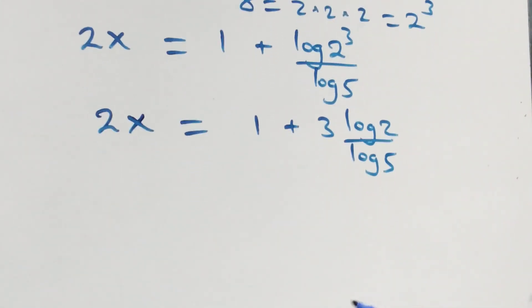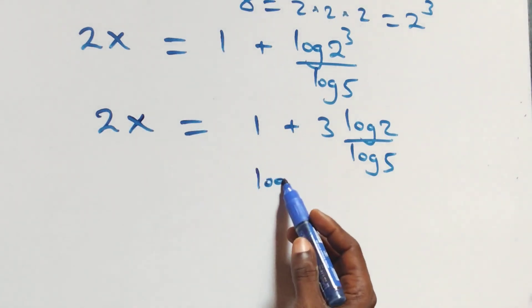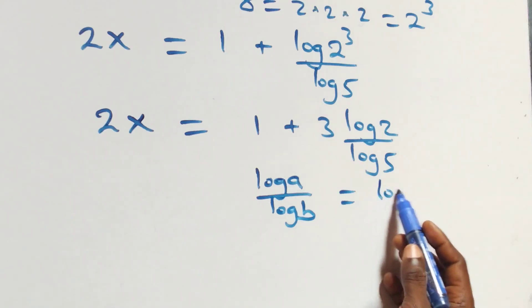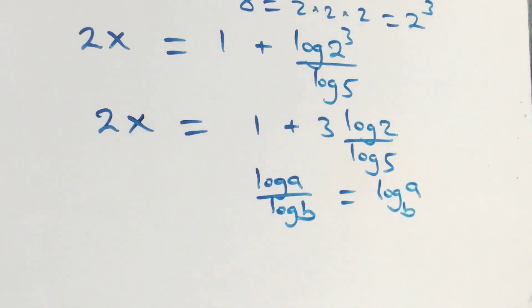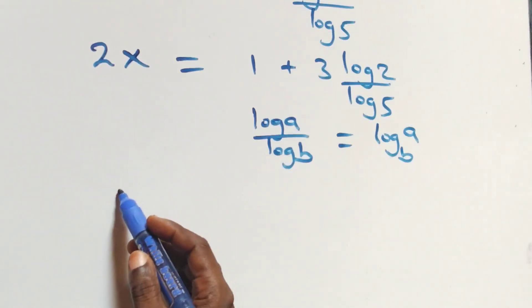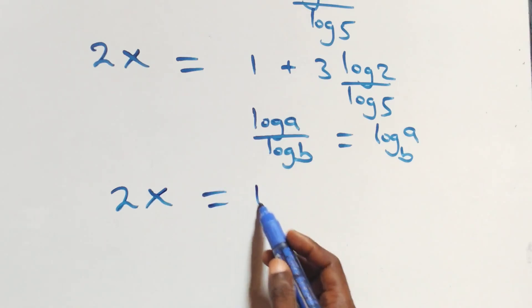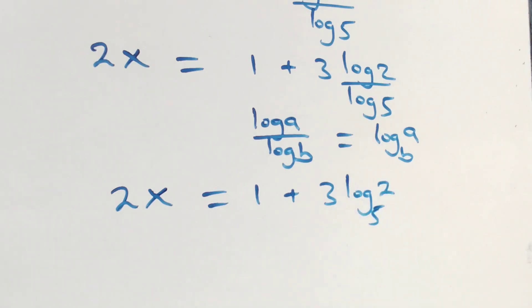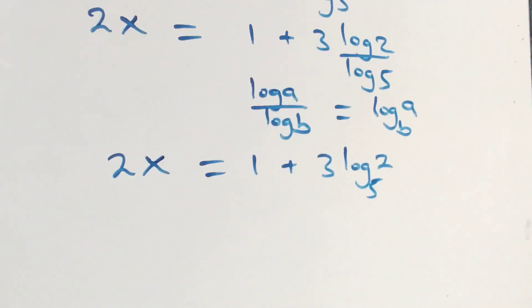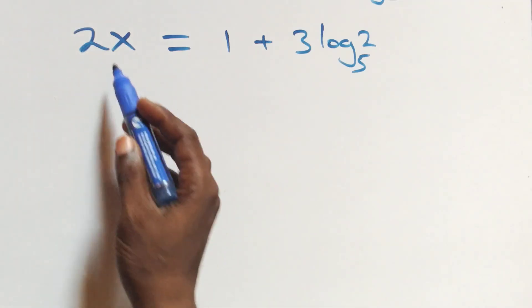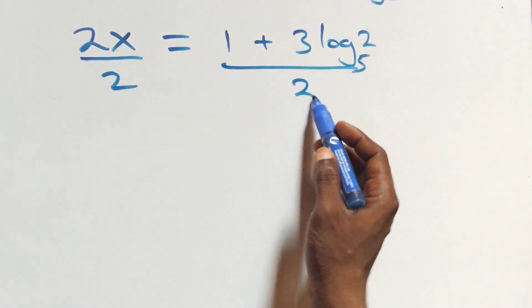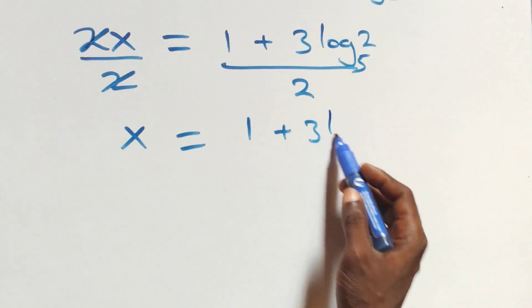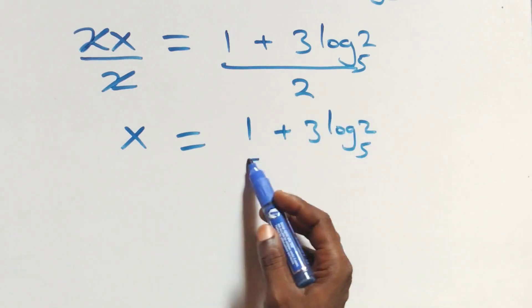Applying the power rule of log, the 3 comes down and we have 2x equals 1 plus 3·log 2 over log 5. Then applying the change of base rule — log a over log b is the same as log base b of a — this becomes 2x equals 1 plus 3·log₅2. Dividing both sides by 2, the 2 cancels and we are left with x equals (1 plus 3·log₅2) all over 2.